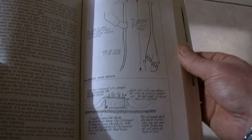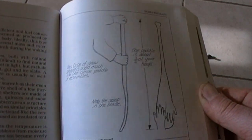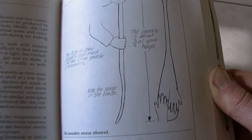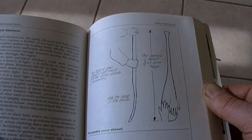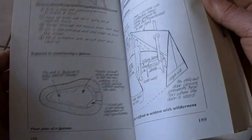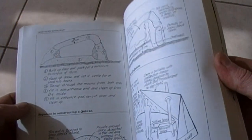More shelters. Snow caves. How to make a snow paddle. I've never seen this before. That's pretty cool. For using in snow. As a shovel. Different snow caves here.